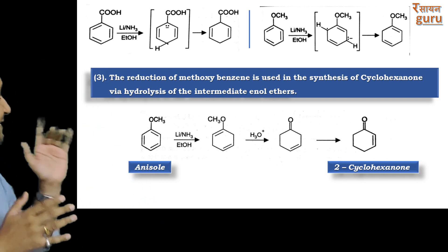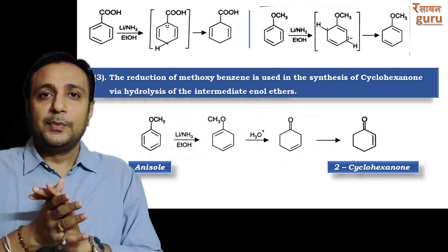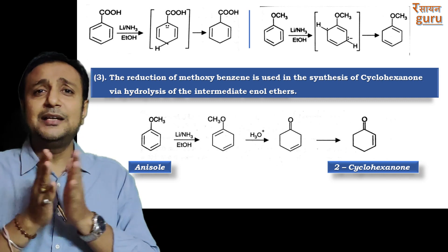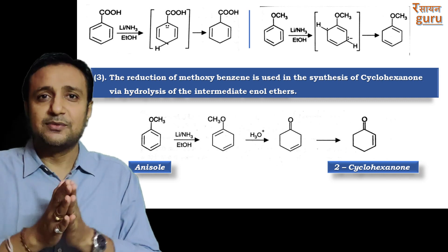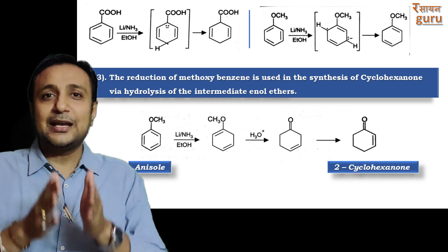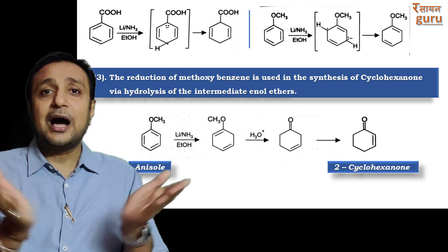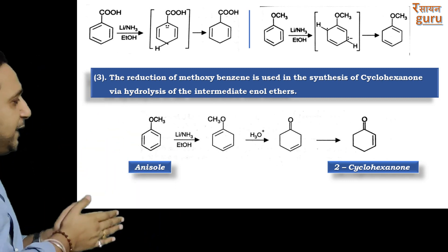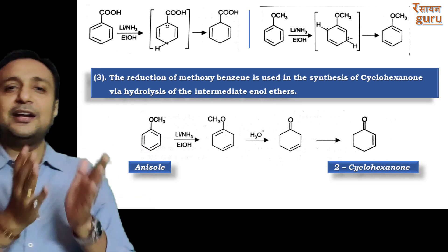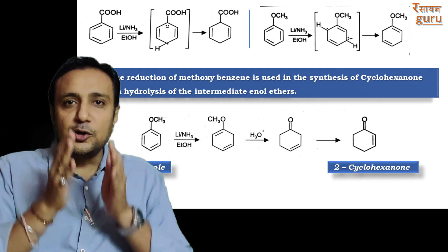In the last example, when anisole undergoes Birch reduction it produces 1-methoxy-1,4-cyclohexadiene, which on hydrolysis forms a molecule that rearranges itself and produces 2-cyclohexadienone.